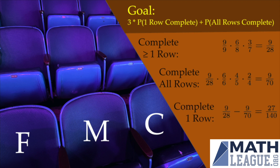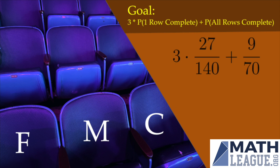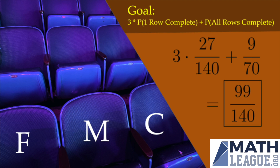The probability that exactly one row is complete is the difference of the two: 9/28 minus 9/70. Substituting back in, the probability we want is three times this difference plus 9/70, which is the probability that all rows are complete. Doing the algebra, this equals 99 out of 140.